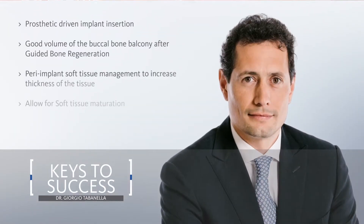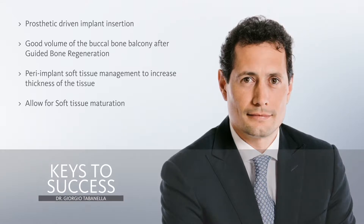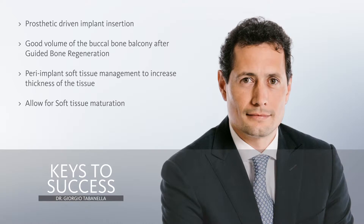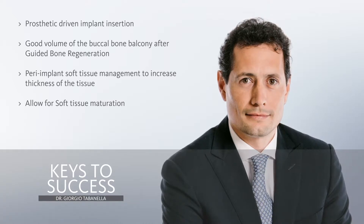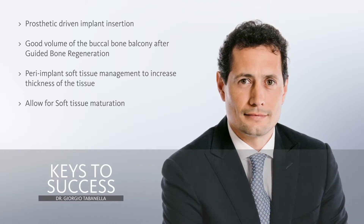So which are the key points here? First of all, we need to insert the implant in the prosthetic-driven direction. Then, of course, we need to have a good thickness of the buccal bone balcony. And then, of course, we need to manage properly the soft tissue, which will create a perfect sealing around the neck of our implant.